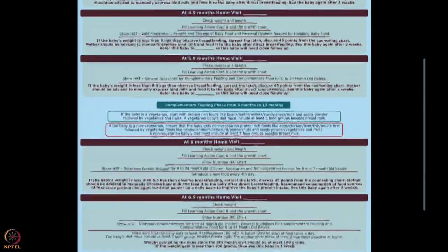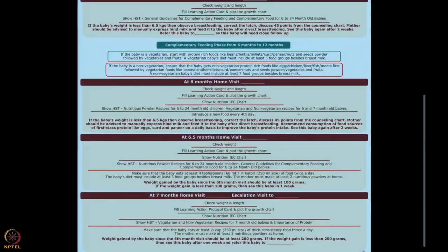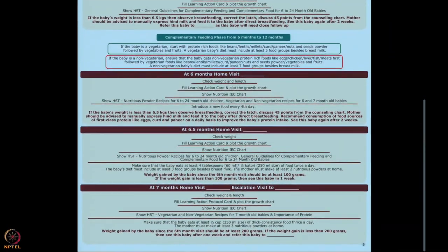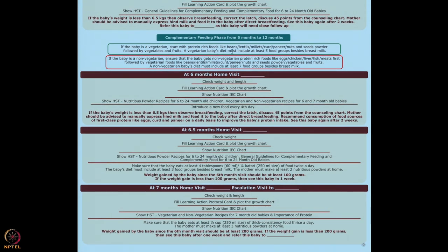Visits continue at three and a half, four and a half, and five and a half months. The complementary feeding phase runs from six to 12 months. If the baby is vegetarian, start with protein-rich food like beans, lentils, millet, curd, and paneer — foods very high in protein. Babies started on non-protein-rich food show stagnation.